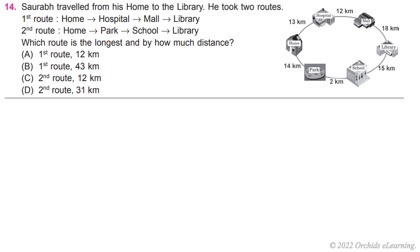Sourabh traveled from his home to the library. He took two routes. First route: home, hospital, mall, library. Second route: home, park, school, library. Which route is the longest and by how much distance? A) First route, 12 kilometers.